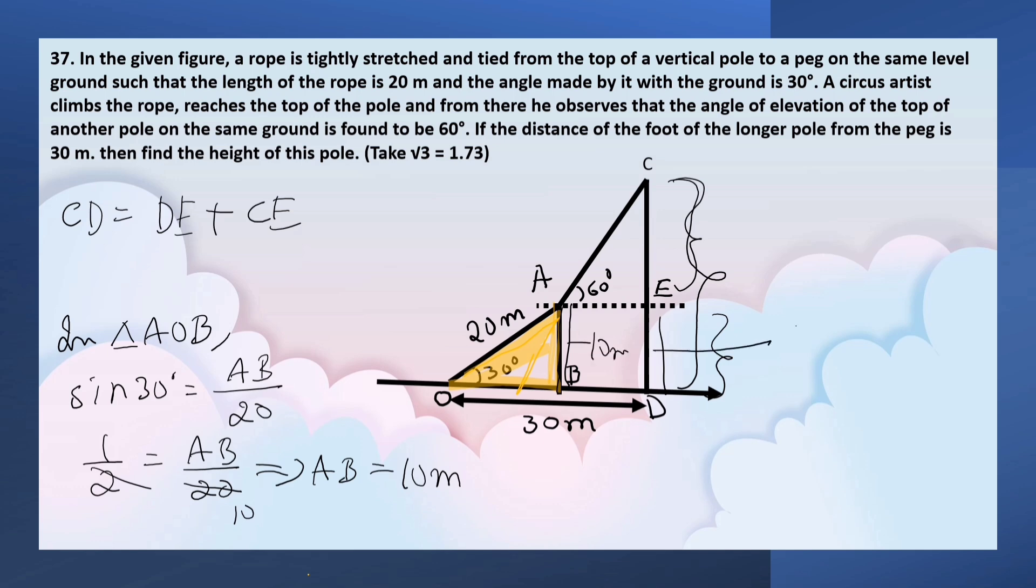We know that AB equals DE, so DE equals 10 meters. In order to calculate CE, we can't use triangle AEC since we don't know any of the sides.